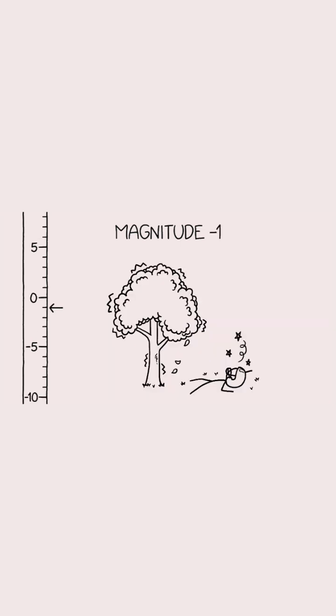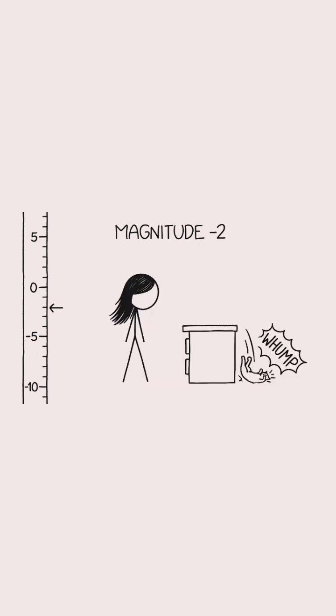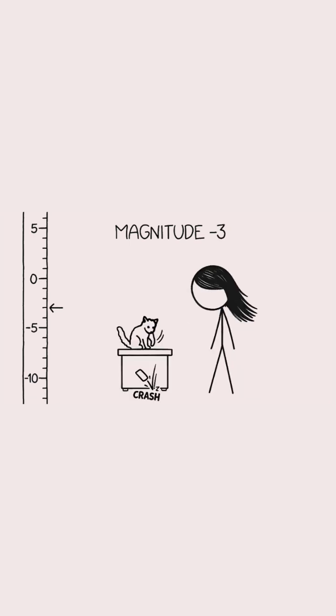A magnitude negative one quake is like a single American football player running into a tree in your yard. A cat falling off a dresser would have a magnitude of negative two. A cat knocking your cell phone off your nightstand would have magnitude negative three.